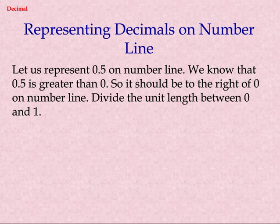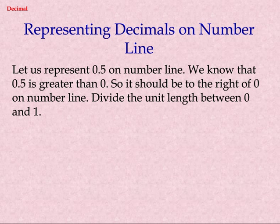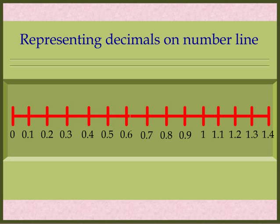Representing decimals on a number line. Let us represent 0.5 on a number line. We know that 0.5 is greater than 0, so it should be to the right of 0 on the number line. Divide the unit length between 0 and 1.